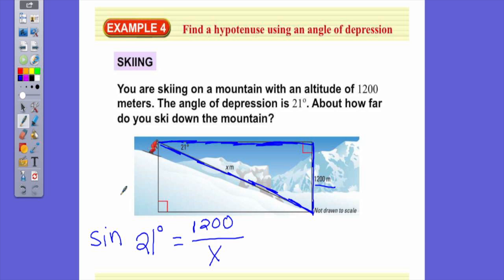So now, in your calculator, 21 sine, what is the ratio? What is the sine ratio for a 21-degree angle? 0.3584. So 0.3584 equals 1,200 divided by x.